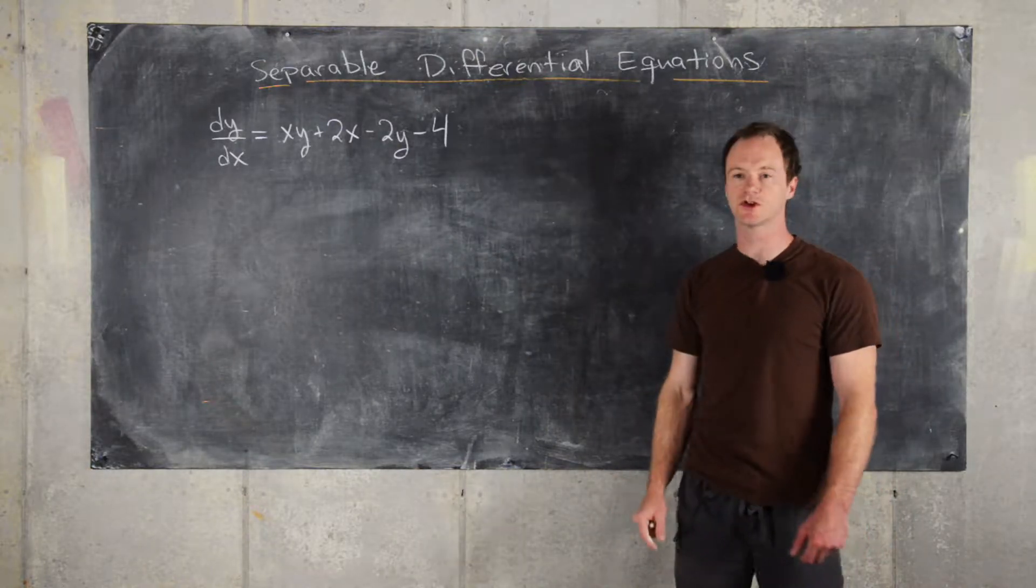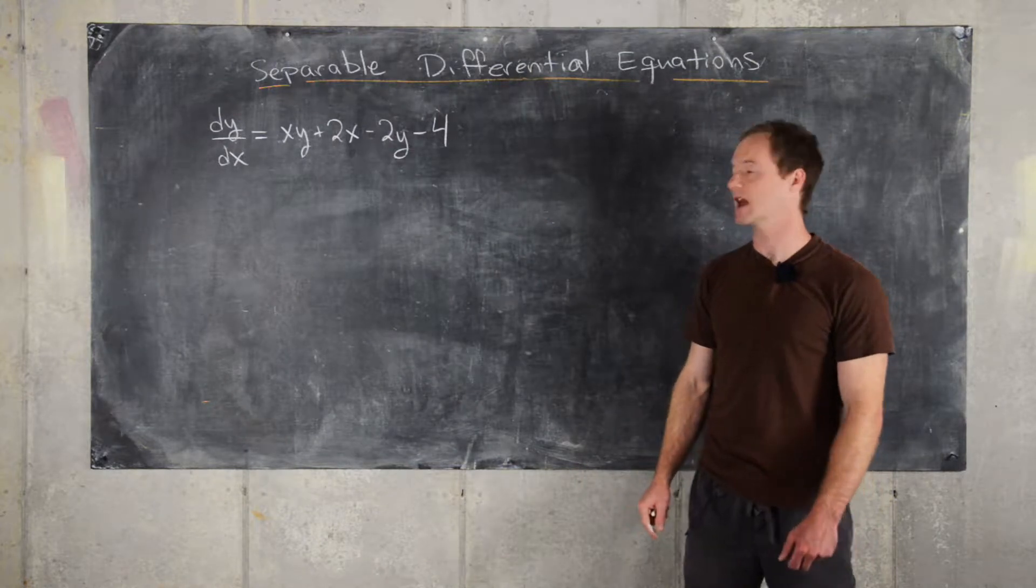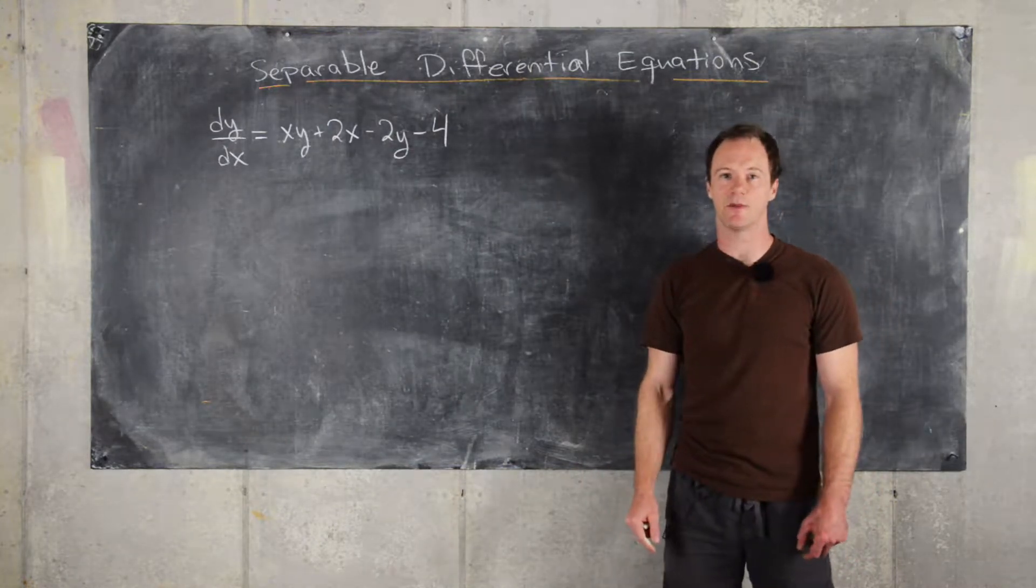Okay, so in this video we're going to look at the solution to this differential equation. We have dy/dx equals xy plus 2x minus 2y minus 4.